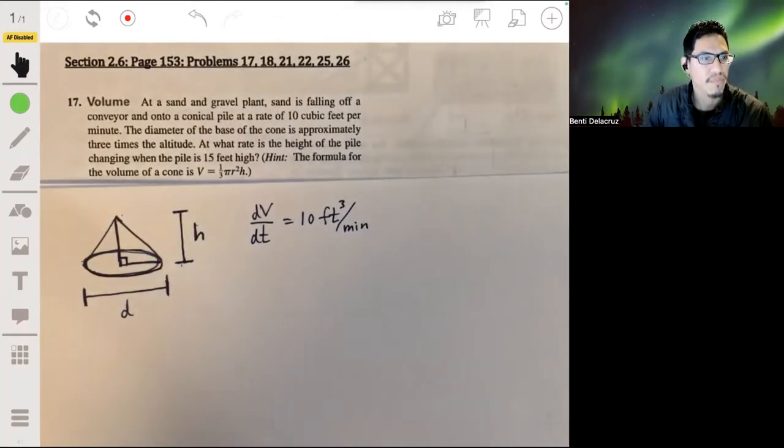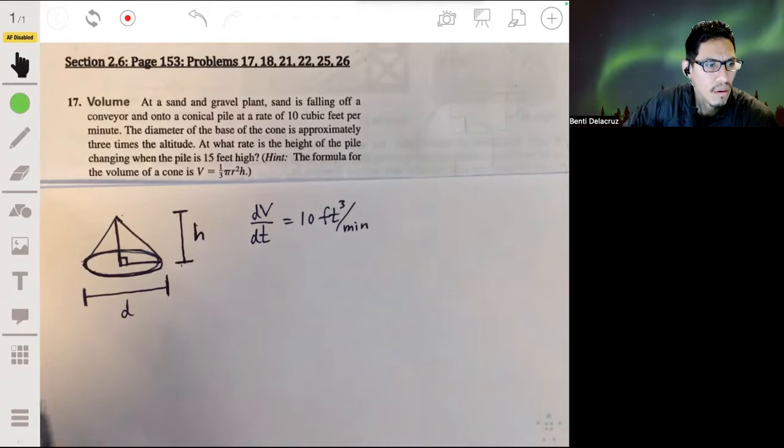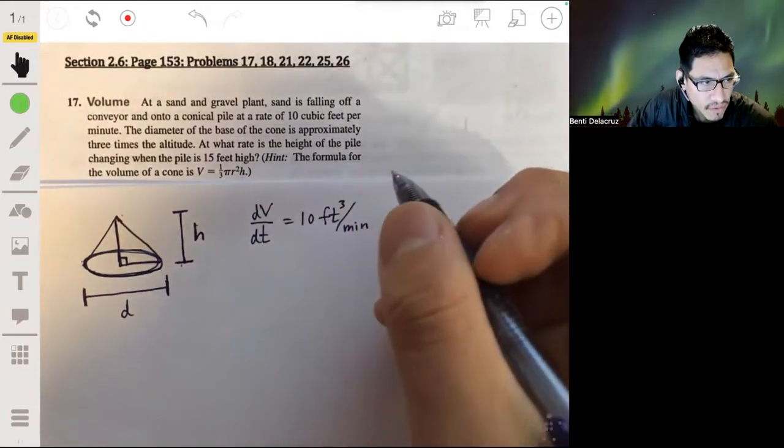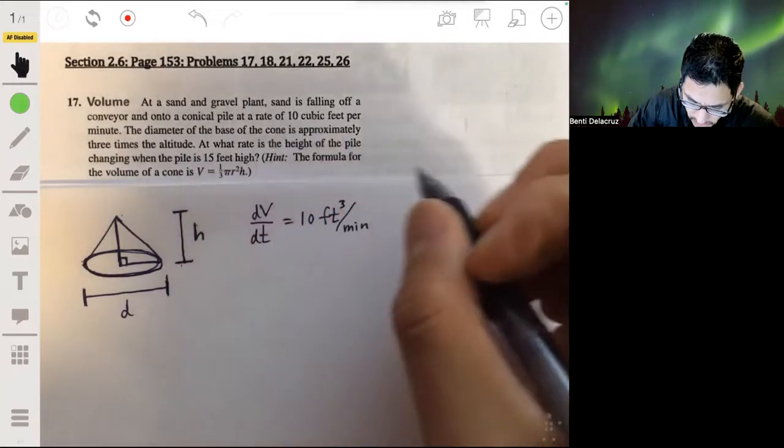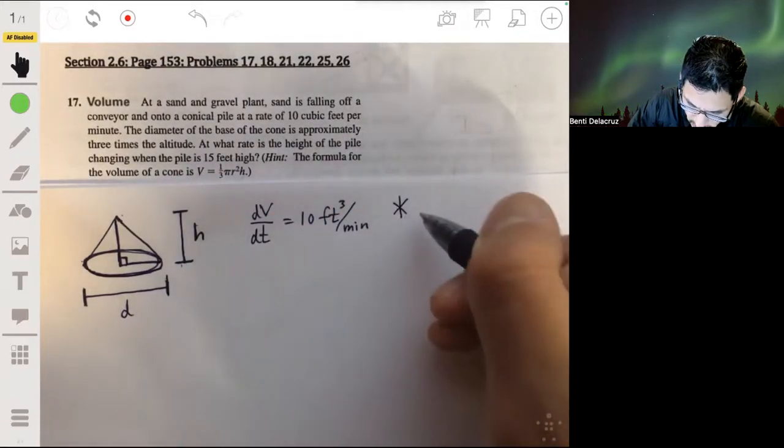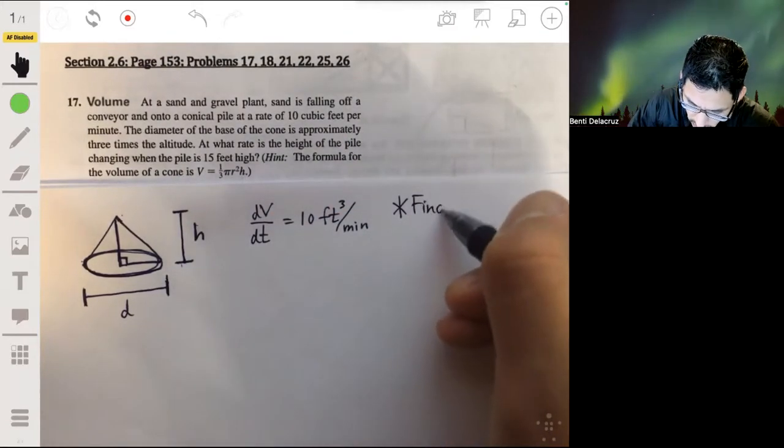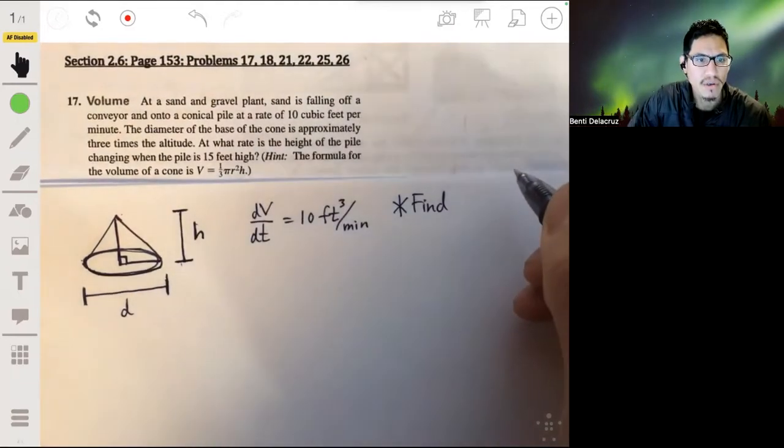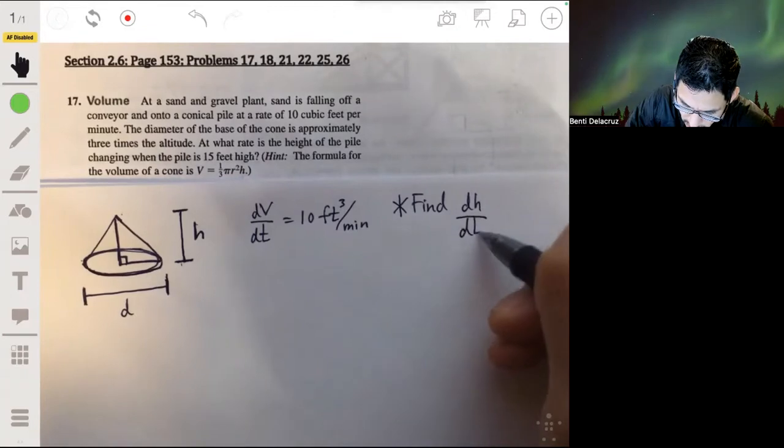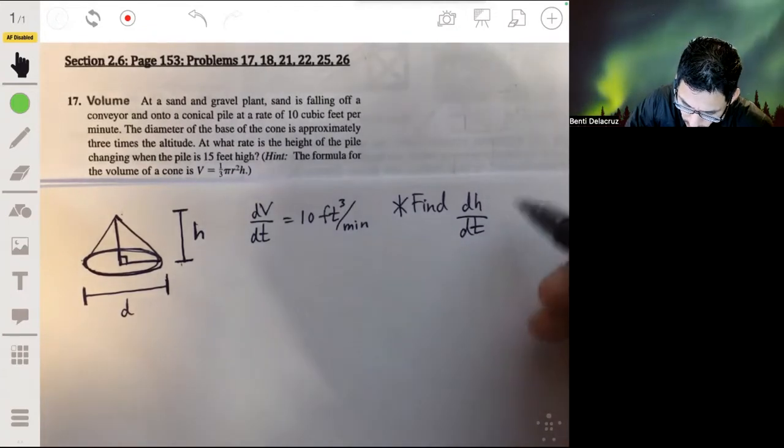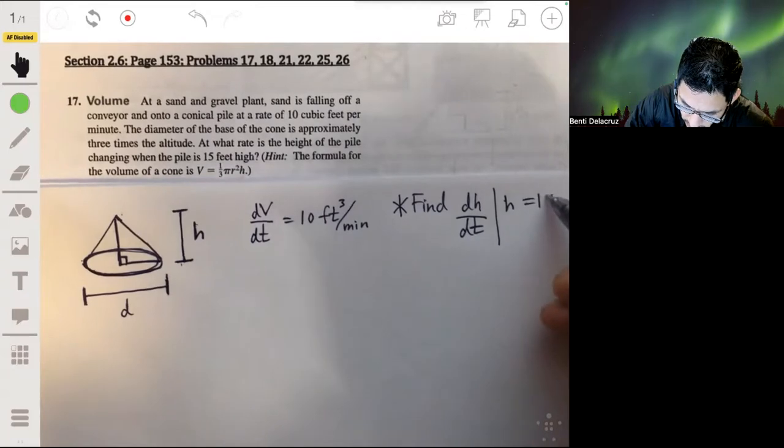Given that we want to find what rate is the height of the pile changing when the pile is 15 feet high. So the question is, or the goal is, to find the change in height dh/dt with respect to time when h equals 15.